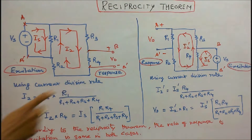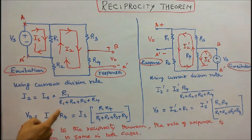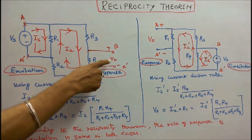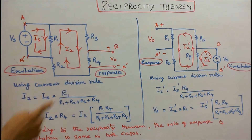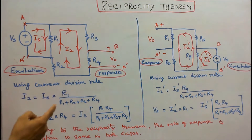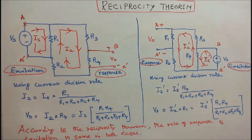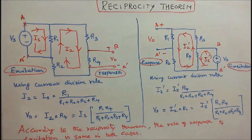Using the current division rule, I2 is equal to IS multiplied by R1, divided by R1 plus R2 plus R3 plus R4. I can easily find V0: V0 is equal to I2 into R4. Therefore, V0 is equal to IS into R1 into R4, divided by R1 plus R2 plus R3 plus R4.